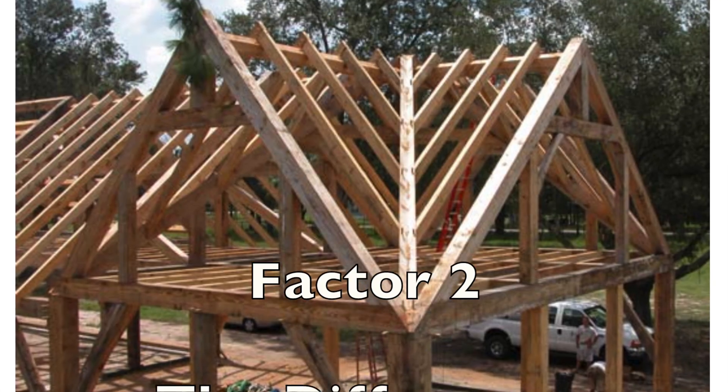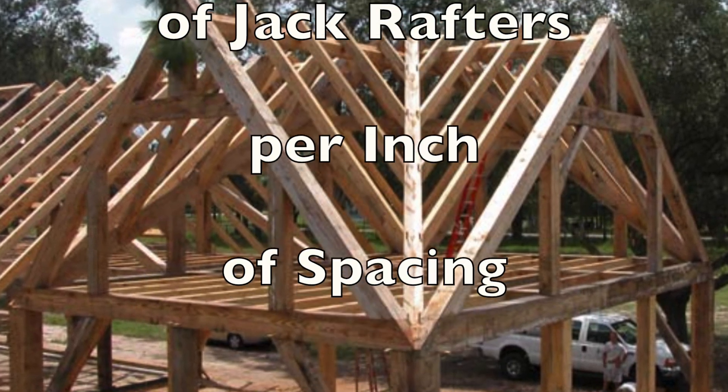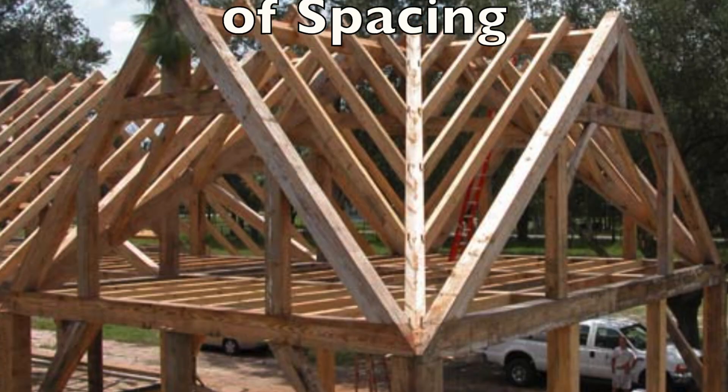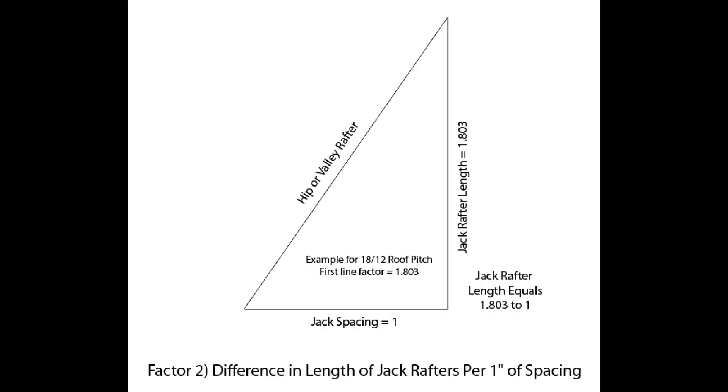Factor 2: the difference in length of jack rafters per 1 inch of spacing. The second aspect of line 1 relates to the difference in length of the jack rafters per 1 inch or any unit of spacing along the plate. By using the base factor of 1, 1 inch, 1 foot, 1 centimeter, 1 meter, the universal square allows one to quickly determine spacing to length ratios for any spacing circumstance.